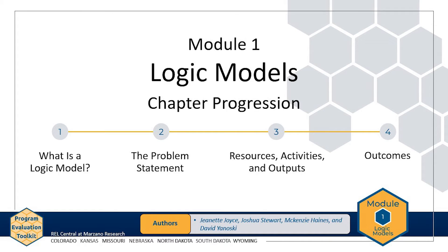This module includes four chapters highlighting the different components of a logic model. Chapter 1 answers the question: what is a logic model, and describes each of the major components. Chapter 2 focuses on writing a problem statement to answer the question: what is the problem that needs to be addressed? Chapter 3 describes the resources, activities, and outputs of the logic model — answering the question: what is the program? Chapter 4 explains the outcomes of the logic model, answering: what outcomes do you expect from the program? Refer to the resources page on the website for worksheets, templates, and other resources to help you develop your own logic model.